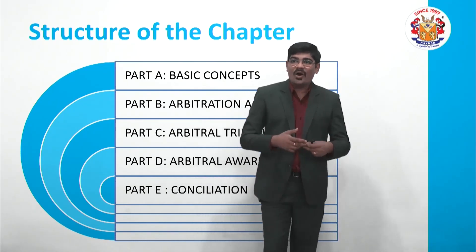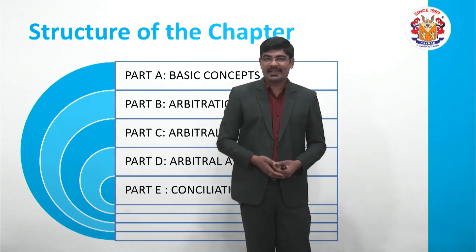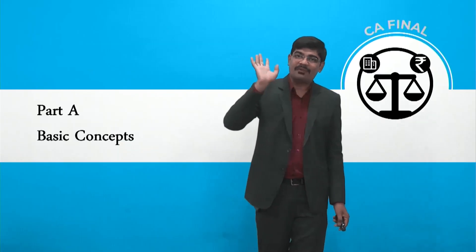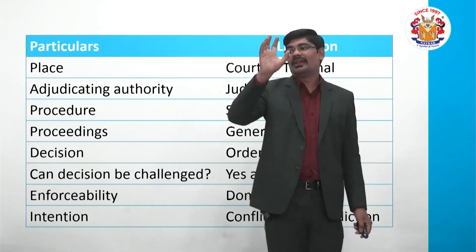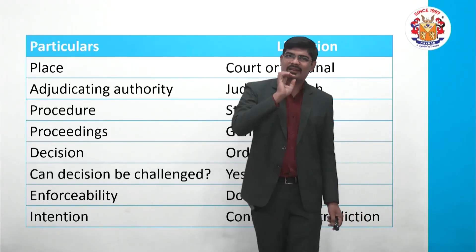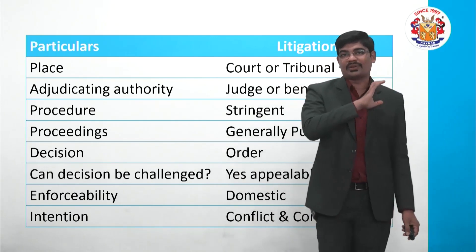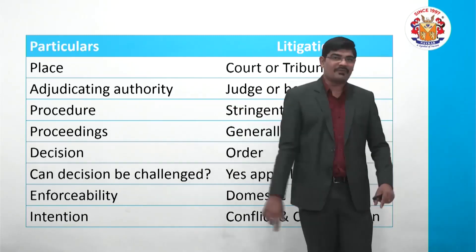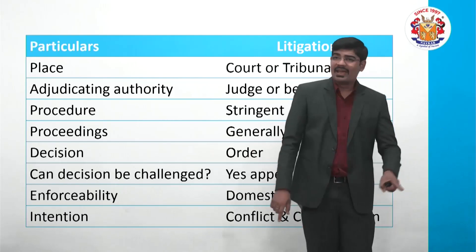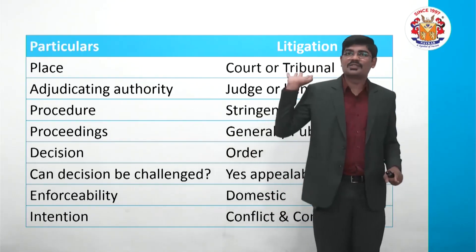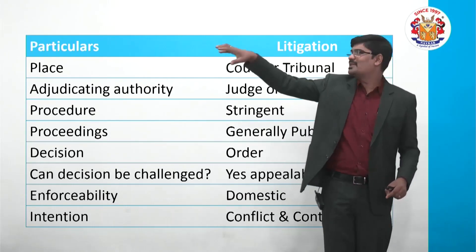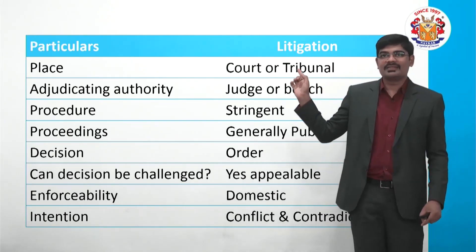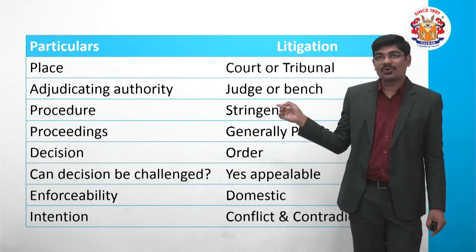The question is how we solve this particular dispute. There are two ways. The very first is the litigation portion. If boys take girls to court — boys versus girls, boys as plaintiff and girls as defendant, or boys as appellant and girls as respondent — the matter goes to a court or tribunal. In litigation, the venue is obviously either a court or a tribunal.